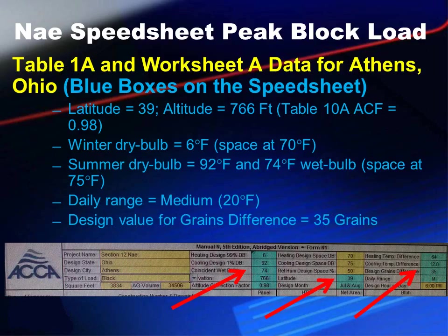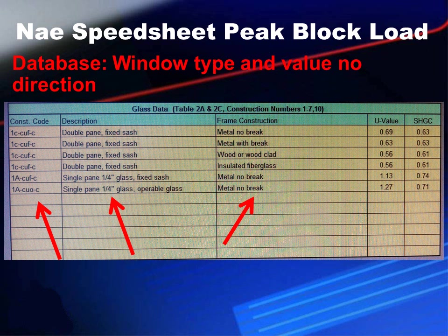The really cool thing about the speed sheet — if you're used to doing these by hand, you're used to filling out a lot of paperwork and writing the same numbers over and over. The speed sheet doesn't make you do that; it automatically populates them. The blue lines on the paper generally mean a field is auto-populated. Design temperatures, latitude, and similar values automatically populate once you pick your state and city. You need the Manual N to find construction codes, descriptions, frame constructions, U-values, and SHGC values, picking the ones closest to what you have in the field.